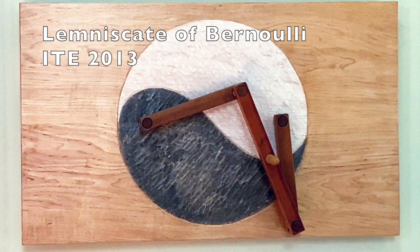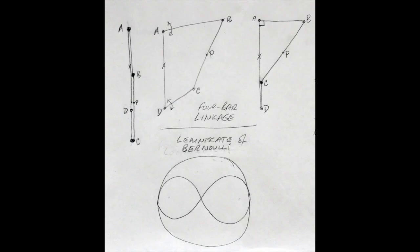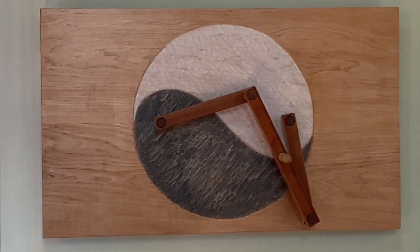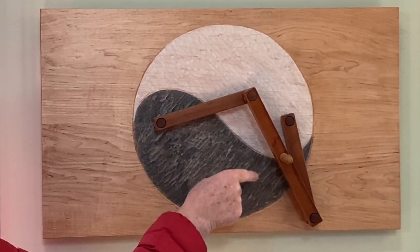Lemniscate of Bernoulli, ITE 2013. Because the connecting bar actually travels from one place to another, we can use it to draw. Find point P, the center of the traveling bar.